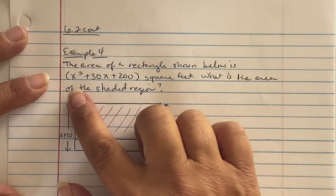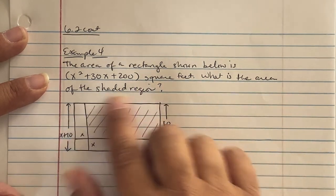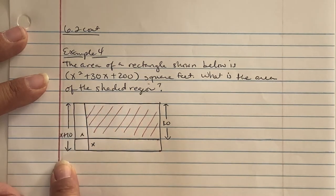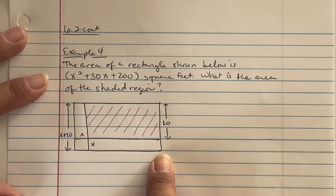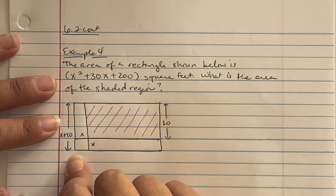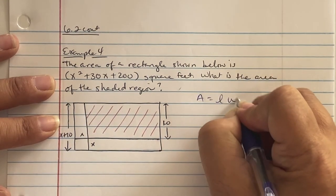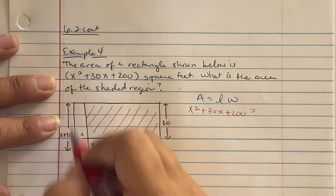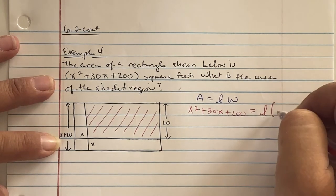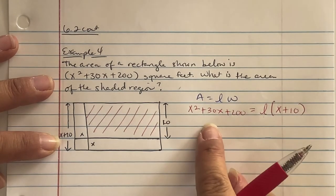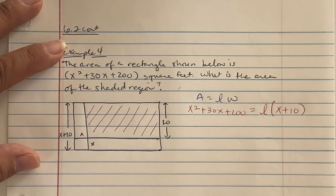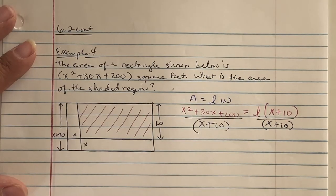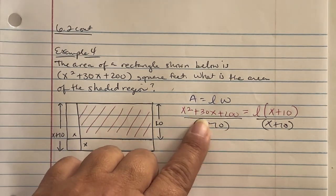Example 4 says: the area of a rectangle is x² + 30x + 200 square feet. A piece is cut out and the width is x + 10, but the length is unknown. Area equals length times width, so x² + 30x + 200 = L × (x + 10). Divide both sides by (x + 10) — we need to know how many times (x + 10) goes into x² + 30x + 200.